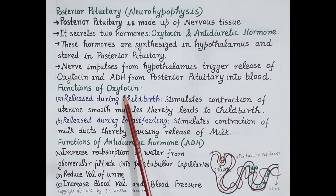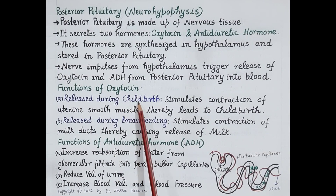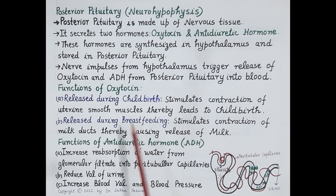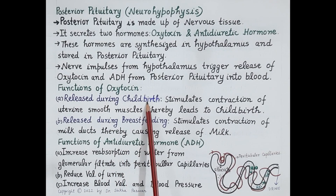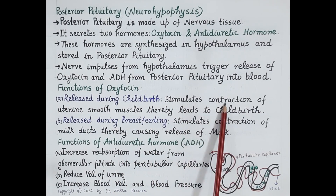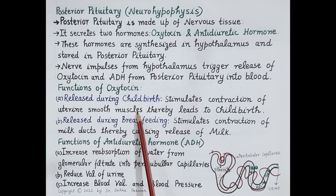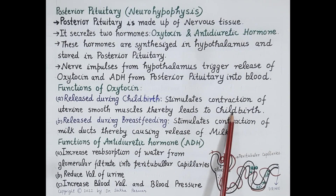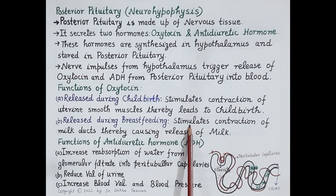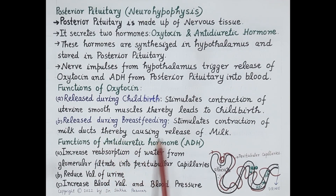Now let us study the functions of oxytocin. Oxytocin has two important functions: it is required during childbirth and for the release of milk from the breast. Oxytocin stimulates contraction of uterine smooth muscles, so when uterine smooth muscles contract, the uterus as a whole contracts and this results in childbirth. Oxytocin is also released during breastfeeding — it stimulates contraction of milk ducts, and contraction of these milk ducts causes release of milk.